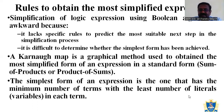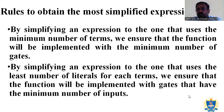That is, we can obtain either the sum of products or the product of sums. The K-Map gives the simplest form of an expression — the one that has the minimum number of terms with the least number of variables in each term. By simplifying an expression to one that uses the minimum number of terms, we ensure that the function will be implemented with the minimum number of gates.